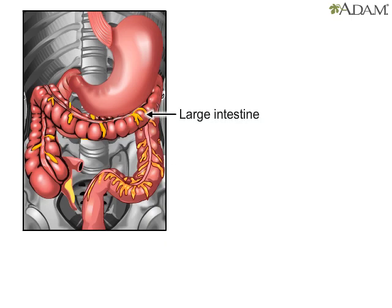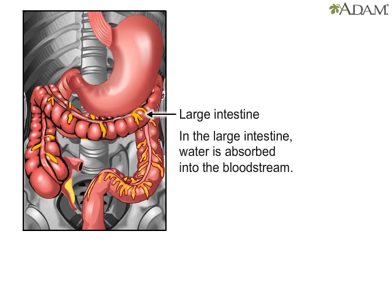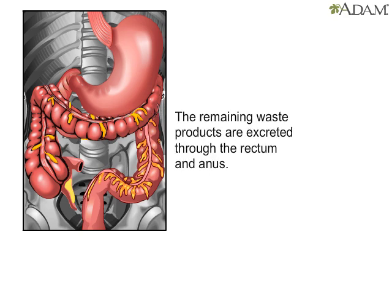In the large intestine, peristalsis helps water from undigested food be absorbed into the bloodstream. Then, the remaining waste products are excreted through the rectum and anus.